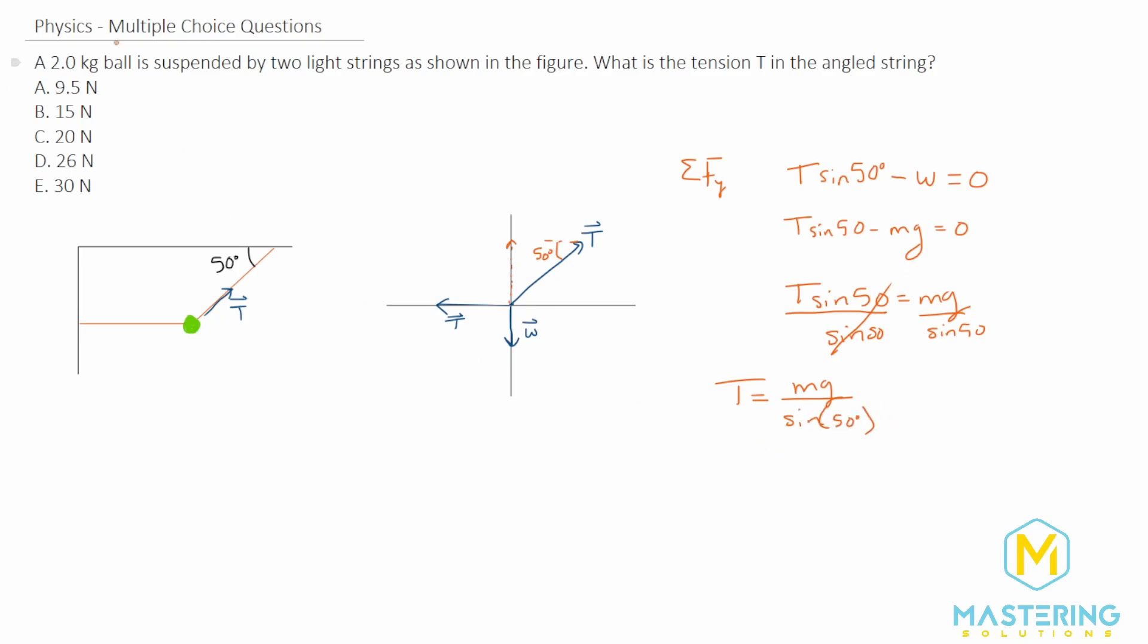Now we plug in our numbers. The mass is 2 kilograms, gravity is 9.8 meters per second squared, and we divide by sin 50 degrees.